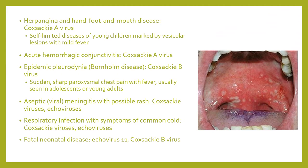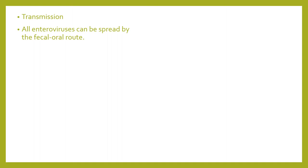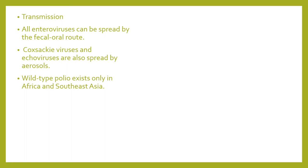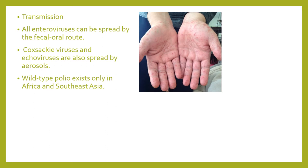This is herpangina — grayish lesions with an erythematous base, presenting as ulcers on the posterior pharynx or soft palate, caused by coxsackievirus. For transmission, all enteroviruses can be spread by the oral-fecal route. Coxsackieviruses and echoviruses are also spread by aerosols. The wild-type poliovirus exists in Africa and Southeast Asia. This image shows the palmar manifestation of hand-foot-and-mouth disease.